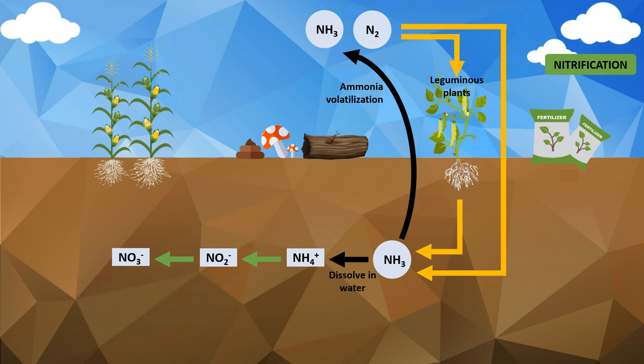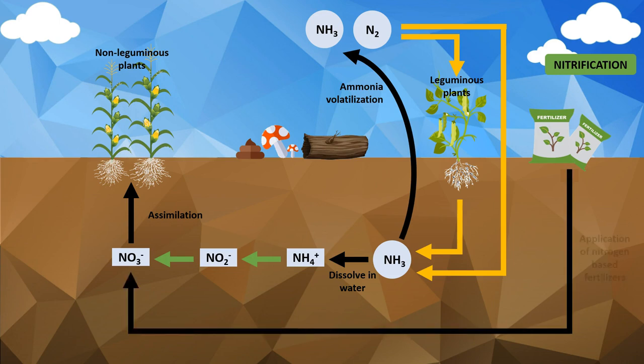These nitrates are an inorganic form of nitrogen that is readily available to be absorbed and assimilated by plants to become organic forms of nitrogen such as amino acids and proteins. Nitrates can also be supplied into the soil through the application of fertilizers.